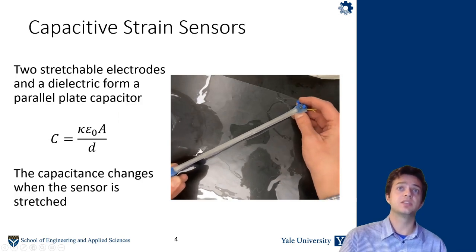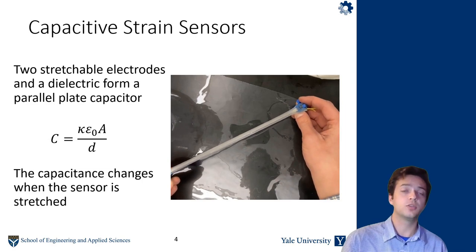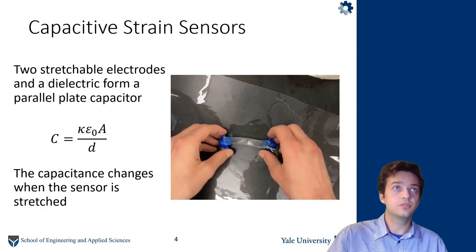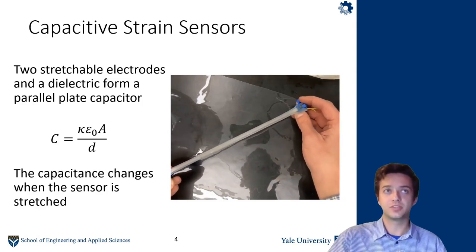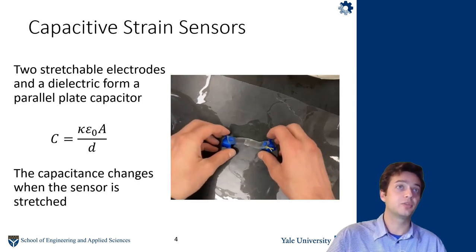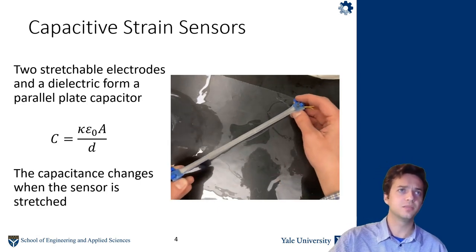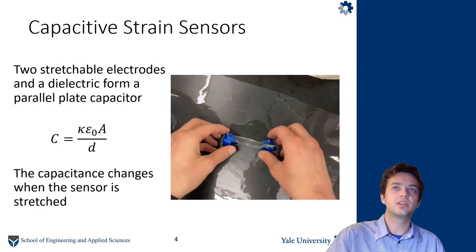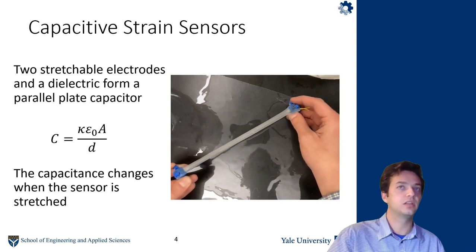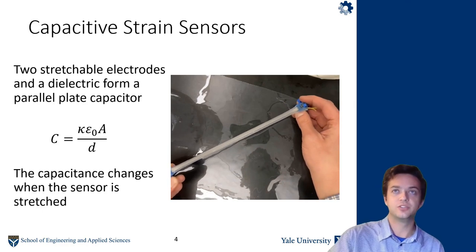So the specific sensing we're looking to integrate into these robotic skins are capacitive strain sensors. As a little bit of background, two stretchable conductive electrodes separated by a dielectric form a parallel plate capacitor. The capacitance of that sensor is determined by the geometry, the dimension of the electrode, the separation distance of the electrode, and the dielectric constant. The capacitance changes when the sensor is stretched, and as long as your dielectric is incompressible and your electrode resistance is sufficiently low, this is actually a linear relationship. The capacitance will increase linearly as you stretch your sensor.